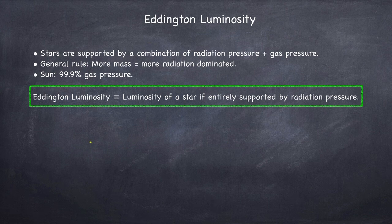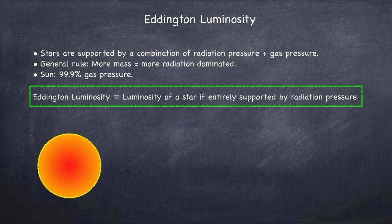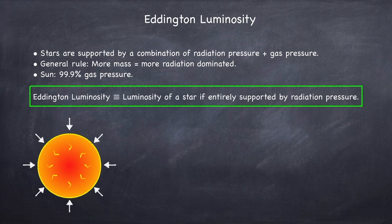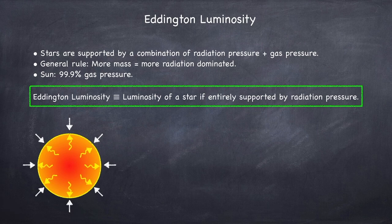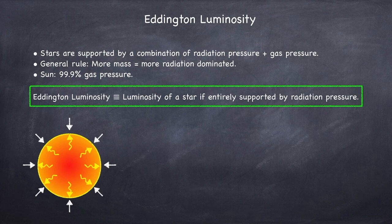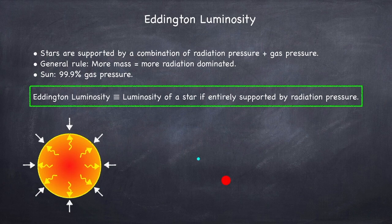Going back to our cartoon diagram of a star, gravity is trying to contract the star, and in this case, the pressure that's counteracting gravity would just be basically photons pushing outwards. Looking at this in closer detail, in the star, we have an electron and a proton.